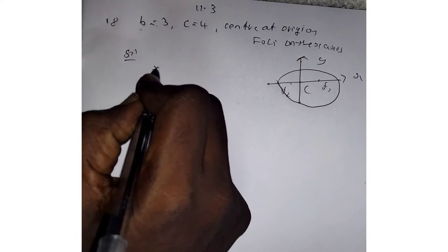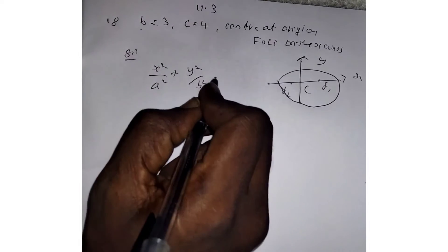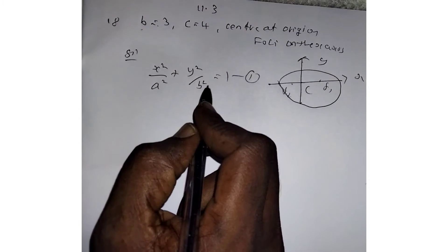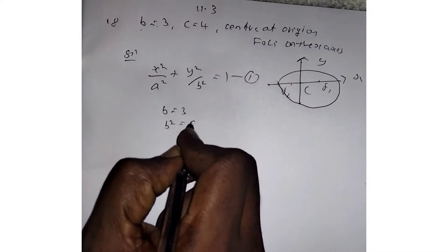The equation of the ellipse in standard form is x²/a² plus y²/b² equals 1. Our aim is to find a² and b². We're already given b equals 3, so b² equals 9.